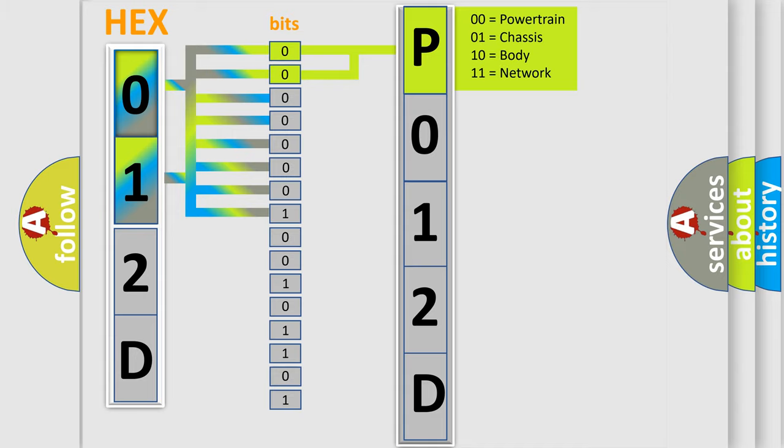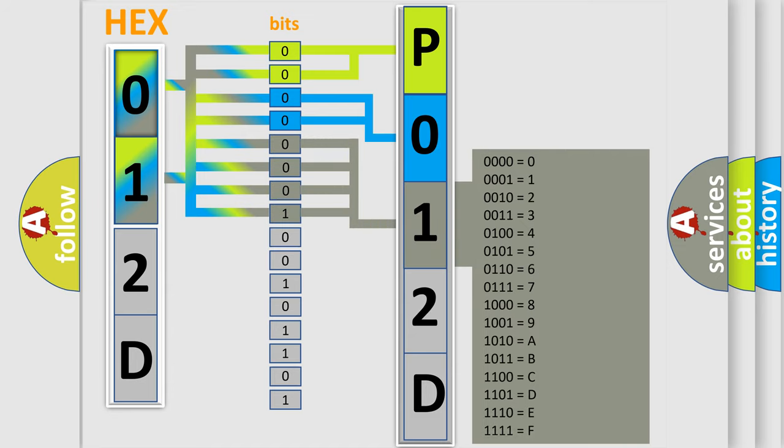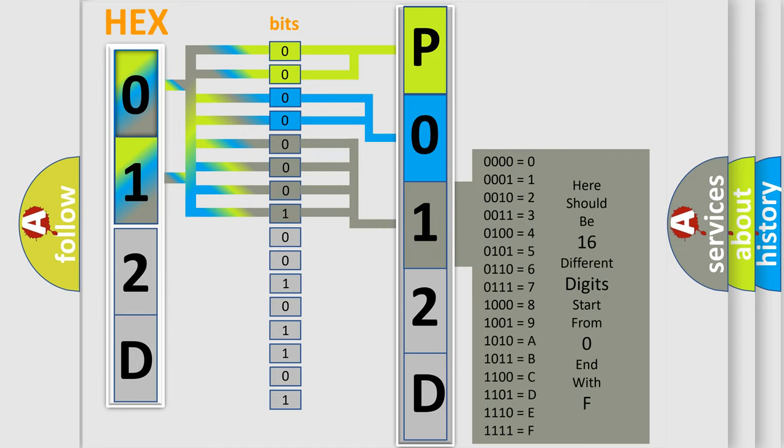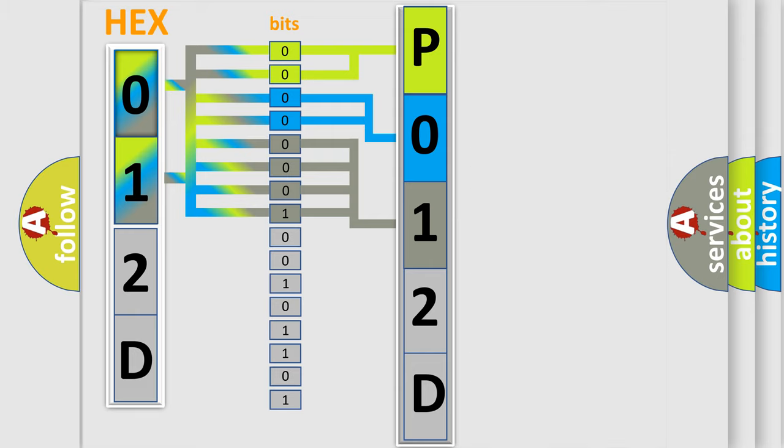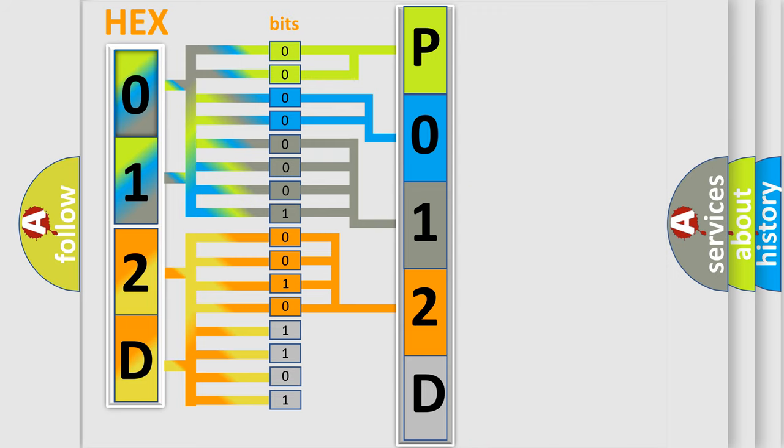By combining the first two bits, the basic character of the error code is expressed. The next two bits determine the second character. The last bit styles of the first byte define the third character of the code. The second byte is composed of a combination of eight bits. The first four bits determine the fourth character, and the combination of the last four bits defines the fifth character.